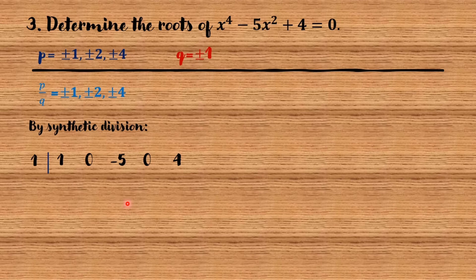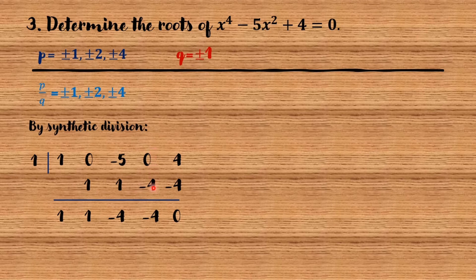By synthetic division, write the coefficients and choose a possible rational root. I will try positive 1. Bring down 1. 1 times 1 equals 1. Negative 5 plus 1 equals negative 4. Negative 4 times 1 equals negative 4. Since the remainder is 0, 1 is a root of the given polynomial.